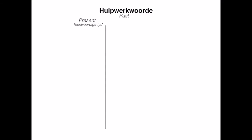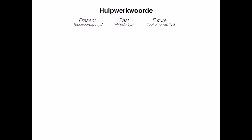Hulp werkwoorde — auxiliary verbs. They can be divided into three groups: Present (teenwoordige tyd), Past (verlede tyd), and Future (toekomende tyd).